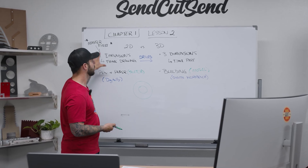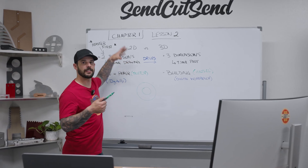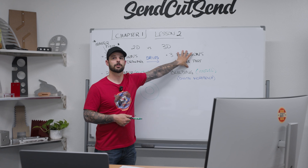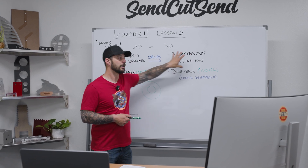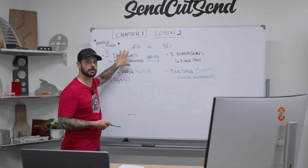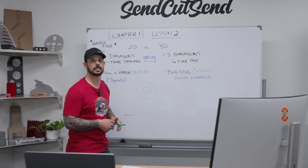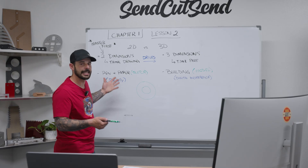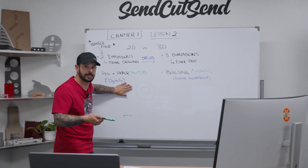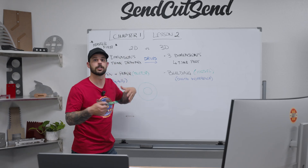The best way to think about these two in an analogy sense is that 2D is the foundation of something, and 3D is the house that you're building on that foundation. We all know that if you build a crappy foundation, you're going to get a crappy house — the house is going to fall apart in 10 years. CAD is no different. If we draw a crappy sketch, then we're going to get a crappy model, and it's all going to break.